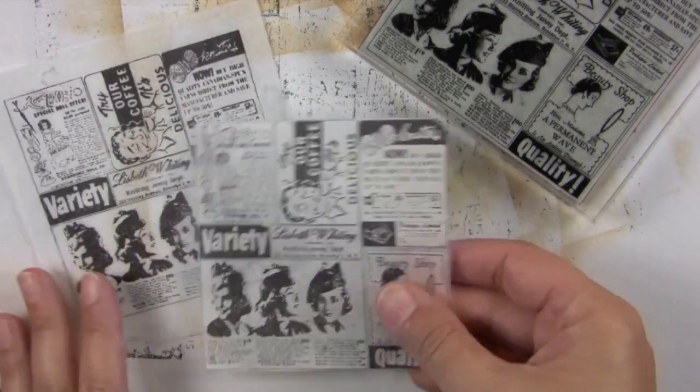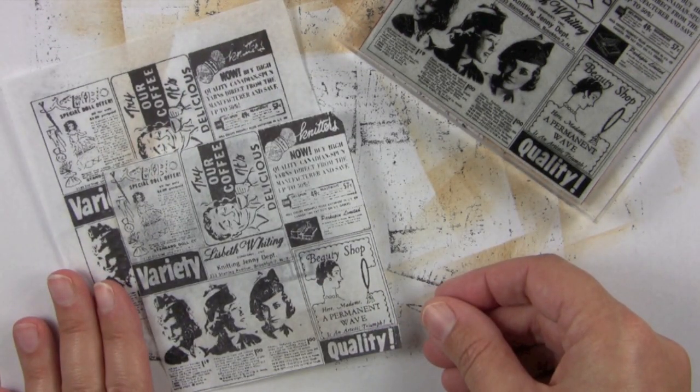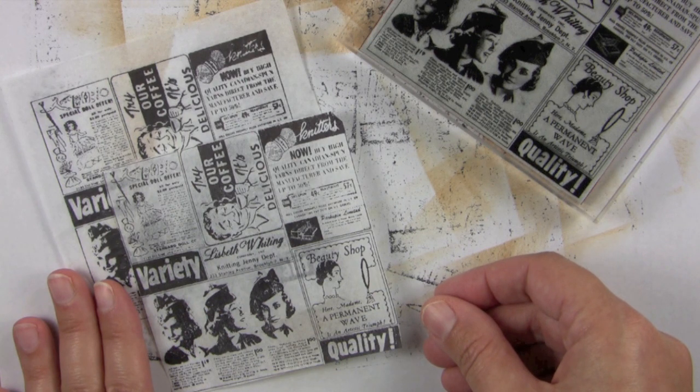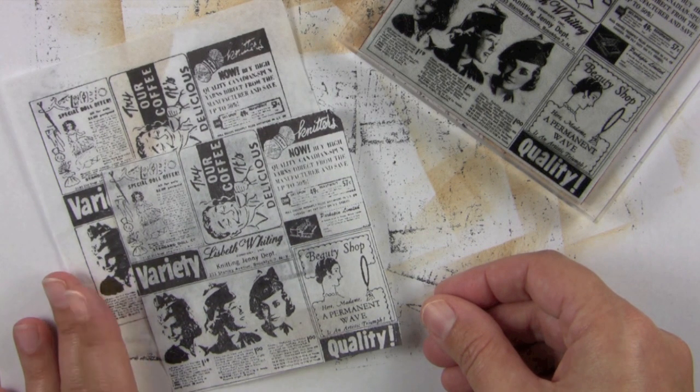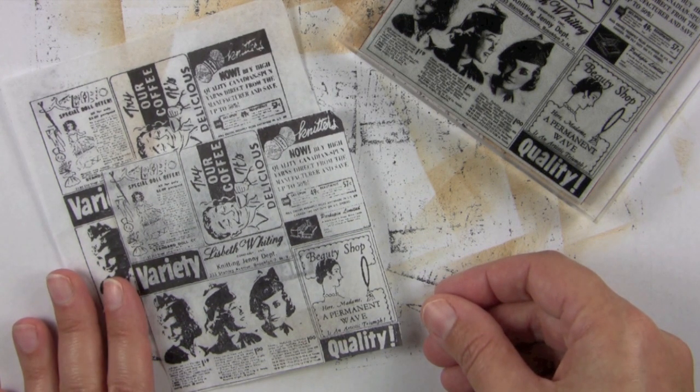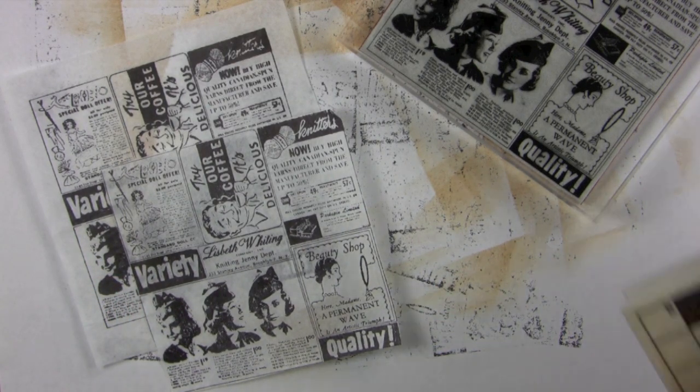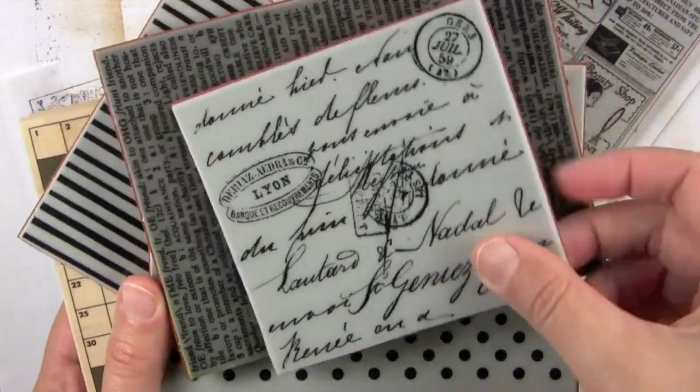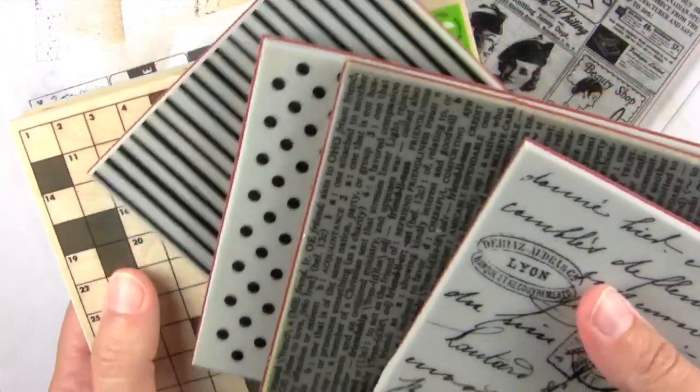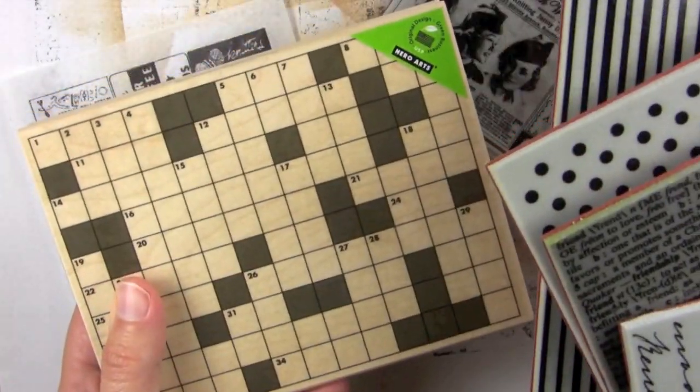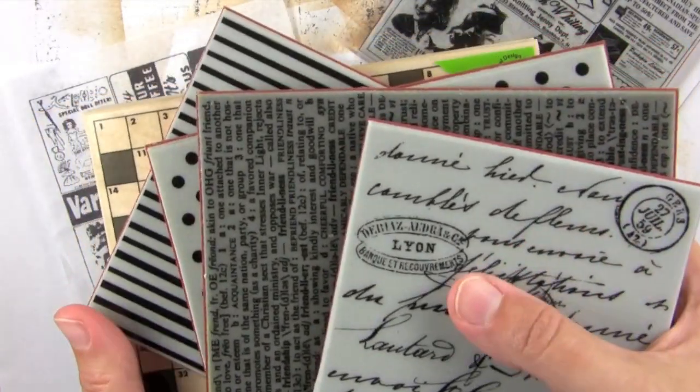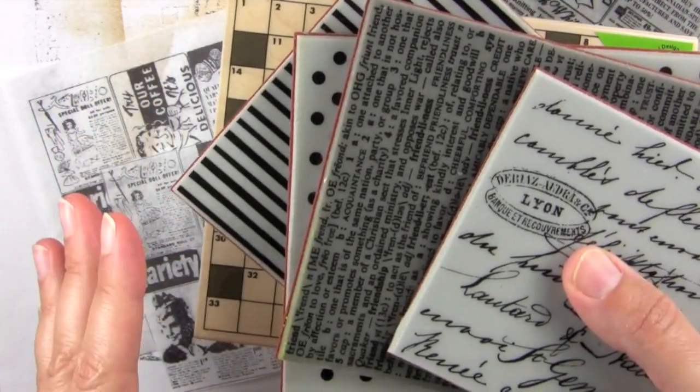You can use any ink that you would use on paper when you're stamping on tissue paper, so chalk ink or dye ink or pigment ink. You'll just have to let it dry a little bit. I also wanted to mention that these flowers work great with any of the bigger cling stamps or the design block stamps. They all work really well because then you can do it all in one swoop.